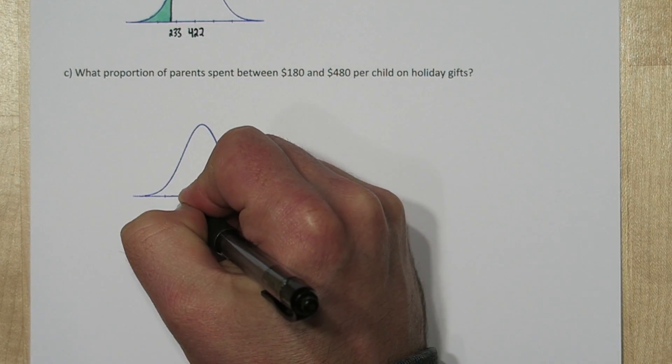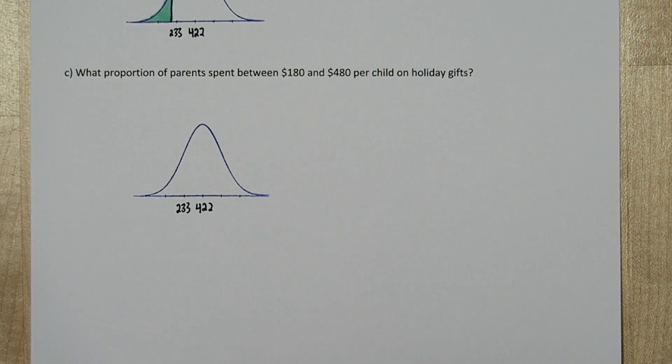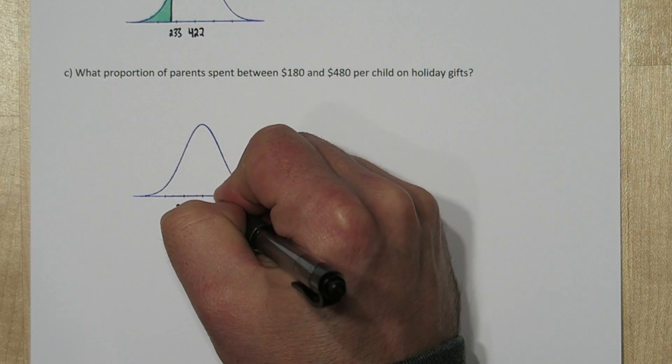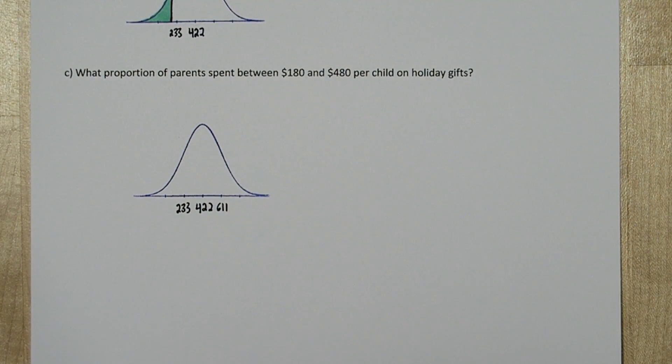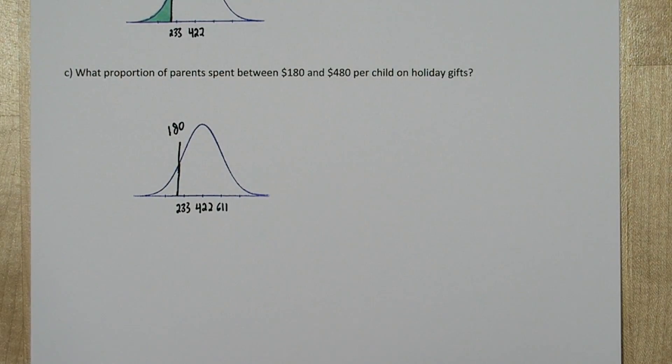So 422 minus 189 gets us to about 611. Alright, so maybe 180 is about here.